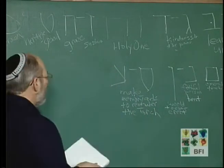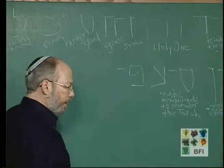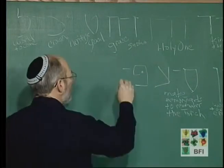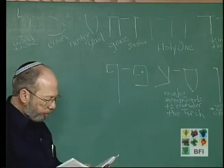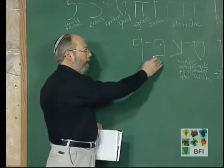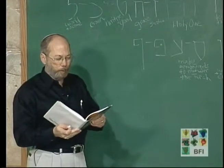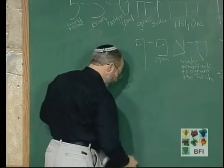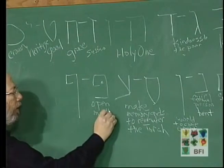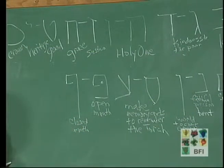The next letter is Pay, and Pay also has an initial and a final form. The initial form needs a dot to make it a Pay — without the dot it takes the F sound, it's a Feh. This is the final form. Every one of these letters is also a word in Hebrew — Pay itself means mouth. They come to tell us that the bent Pay and the straight Pay allude to an open mouth and a closed mouth.